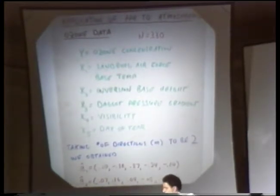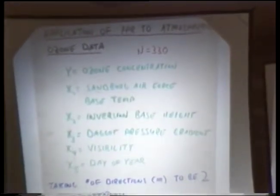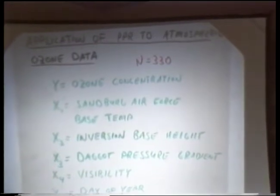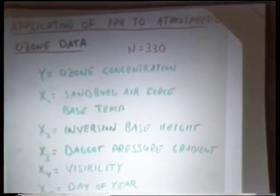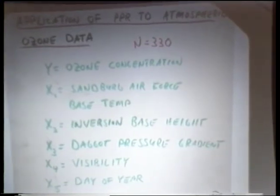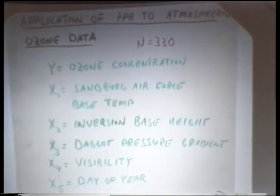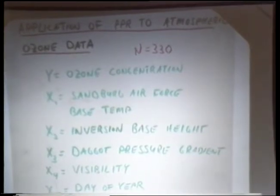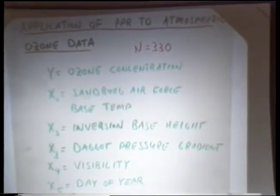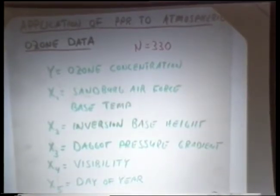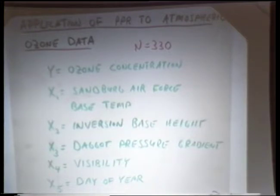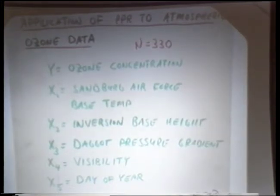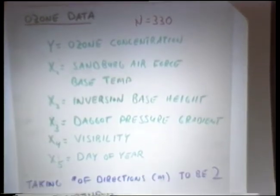This black box produces an s1 hat, an a1 hat, an s2 hat, and an a2 hat. And as we saw, it's a very sophisticated black box. Okay, this slide will go up again. We're going to apply this to a set of real data and then apply the bootstrap. I will leave this again over here. This is a set of data given to us by Leo Breiman of Berkeley, consisting of 330 observations, the response being ozone concentration. The covariates, five covariates: Sandberg Air Force Base temperature, the inversion base height, Daggett pressure gradient, visibility, and day of year.